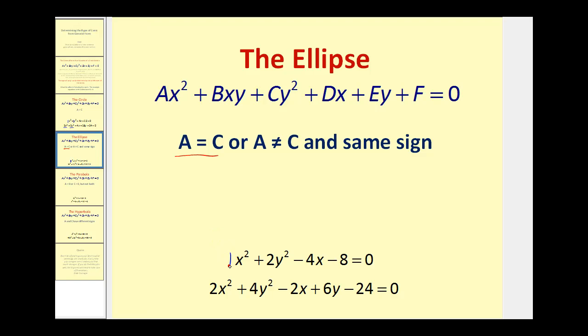In this first example we have A equals one and C equals two. They're both positive, therefore we have an ellipse. In the second example we have A equals two and C equals four. Both the same sign, therefore we have an ellipse.